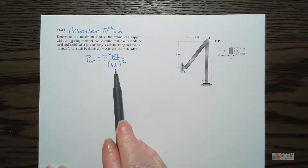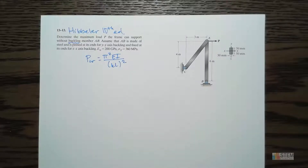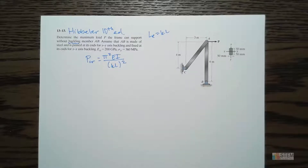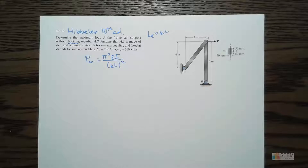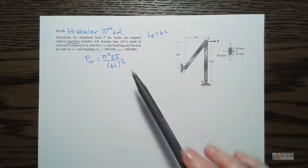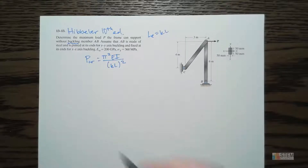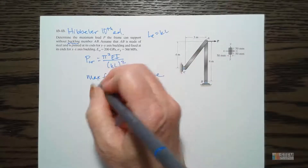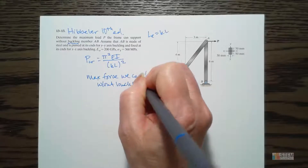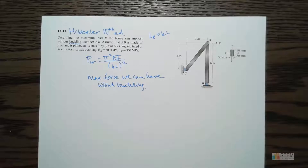Remember, K times L is just replacing L-sub-E, the effective length. The effective length is basically how you end up canceling all the moments out of the column. PCR tells you the max force we can have in our member without buckling - we don't want to go beyond that value, because then we're going to have buckling and not meet our design specifications.